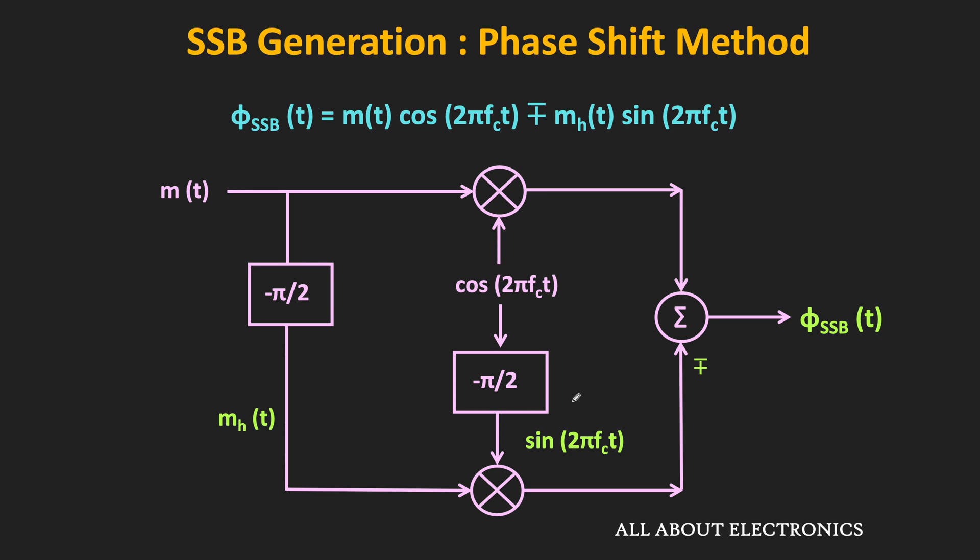The first method is the phase shift method. In this method, with the help of the balanced modulator and the Hilbert transform block, it is possible to generate the SSB signal. As you can see, these two blocks are the balanced modulators, which multiply two signals, while these two blocks are the Hilbert transform phase shifters, which provide a phase shift of –π/2.